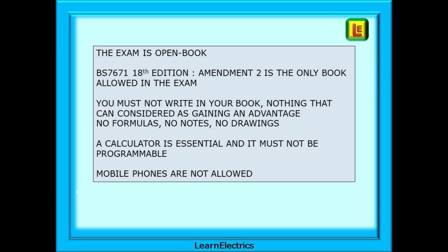BS 7671 18th edition Amendment 2 is the only book allowed in the exam. You must not write in your book — nothing that could be considered as gaining an advantage. That means no formulas, no notes, no drawings. A calculator is essential and it must be non-programmable, and mobile phones are definitely not allowed. Some exam centres will insist that you use their books and their calculators — check with your exam centre.